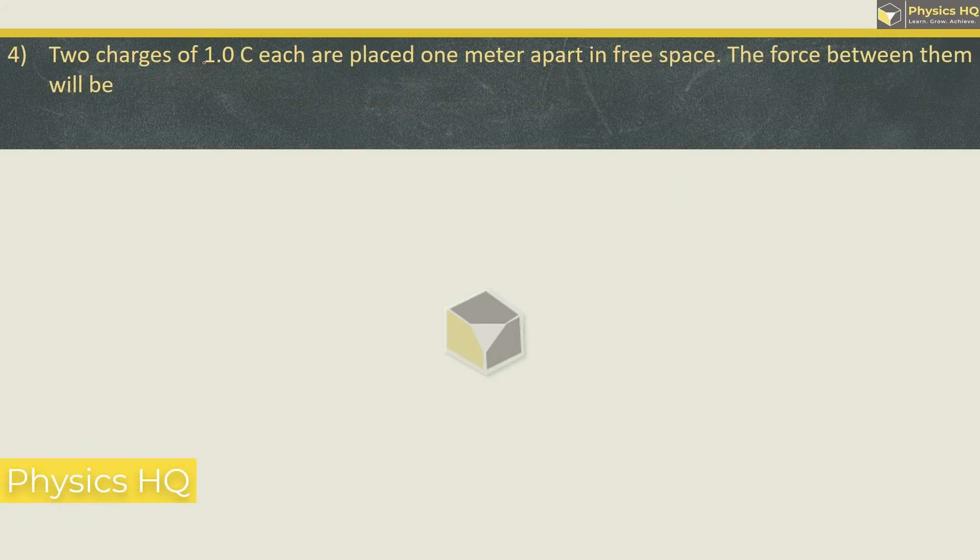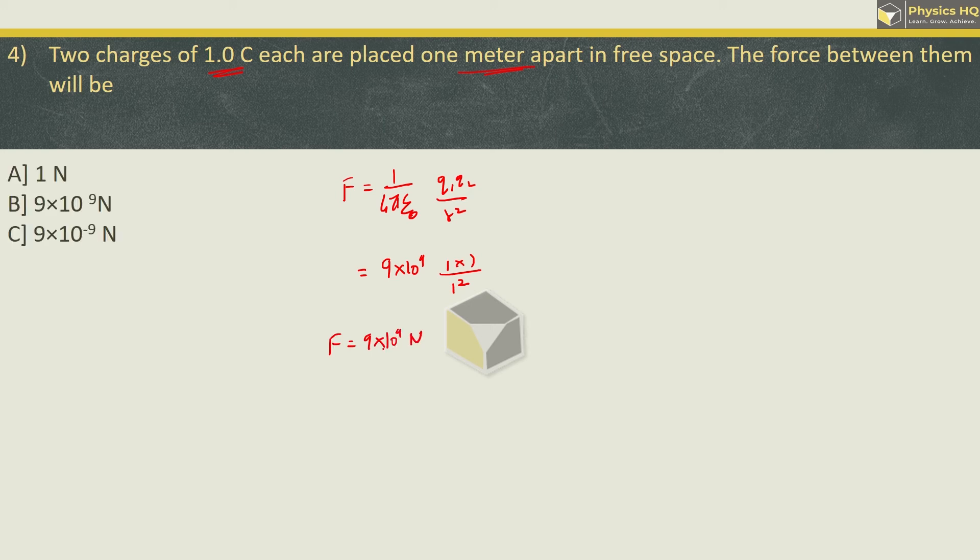Two charges, 1 coulomb each, are placed 1m apart in free space. The force between them - the force formula: 1 upon 4 pi epsilon naught q1 q2 upon r square. 1 upon 4 pi epsilon naught is 9 into 10 raised to 9, both charges value is 1, and distance is 1. So we got force equal to 9 into 10 raised to 9 newton. So the correct option is option B.